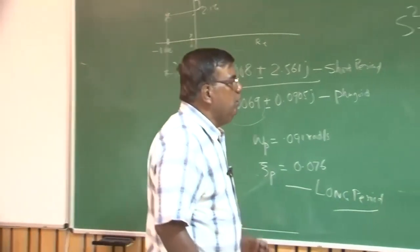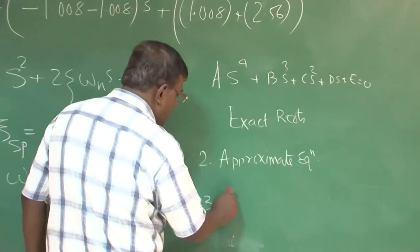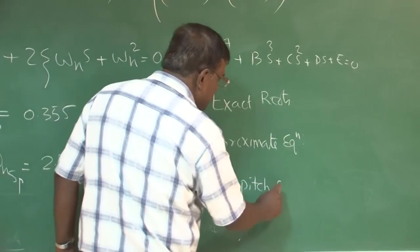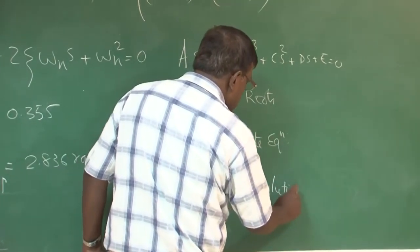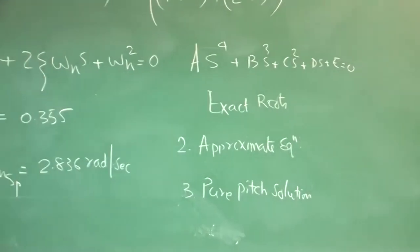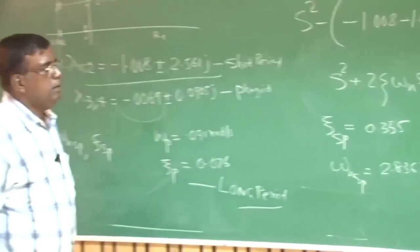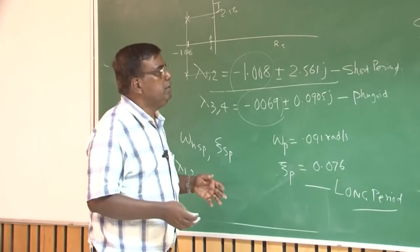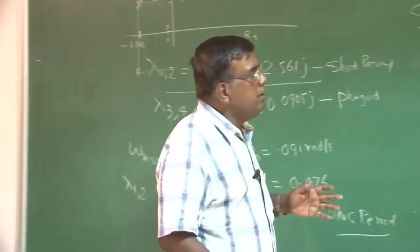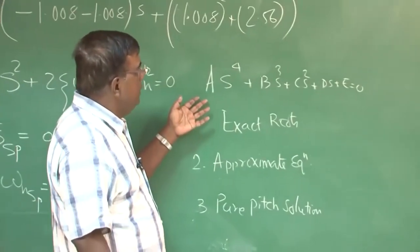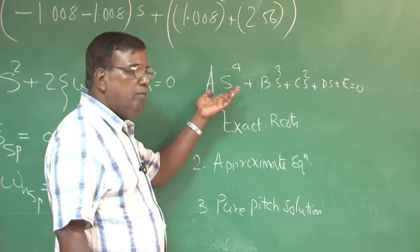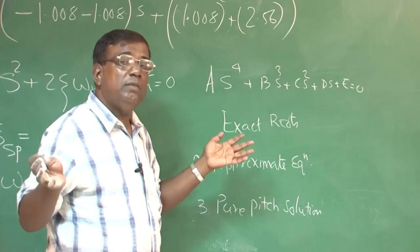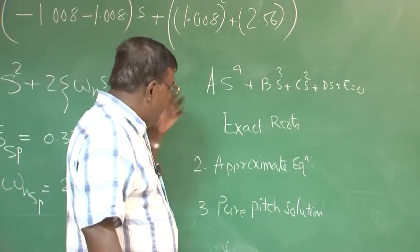Next step, we will come to approximate equations and from there we will get again the meaning of short period and fugoid mode through approximation. That will be simpler. And finally we will compare them with the pure pitch solution. Remember these three things.